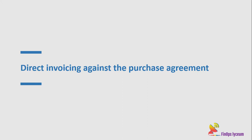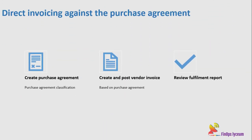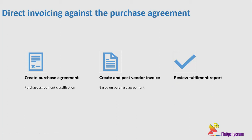Let me show you how we can do that. In direct invoicing, we will first create a purchase agreement. In the purchase agreement classification, we will toggle a button called direct invoicing. Based on that configuration, we will create a purchase agreement and then create and post a vendor invoice against it. We will then review a fulfillment report to see how much the agreement is worth and how much has been invoiced.